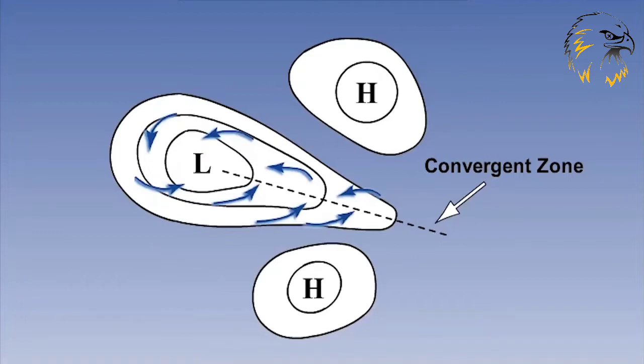The weather around these troughs is very similar to that of the main depression itself, with all the potential problems of cloud, precipitation, icing, and turbulence.